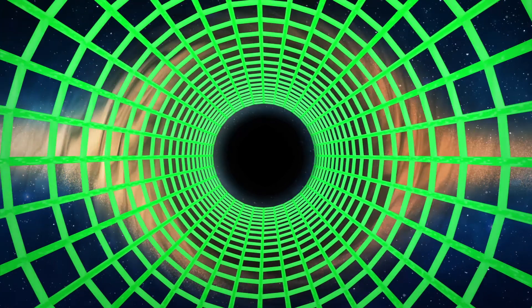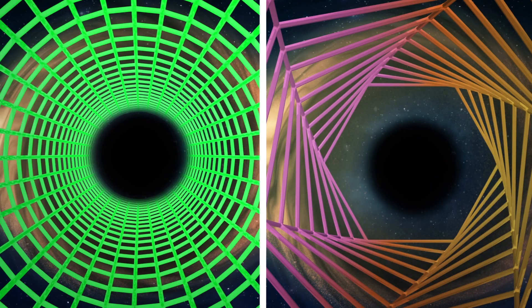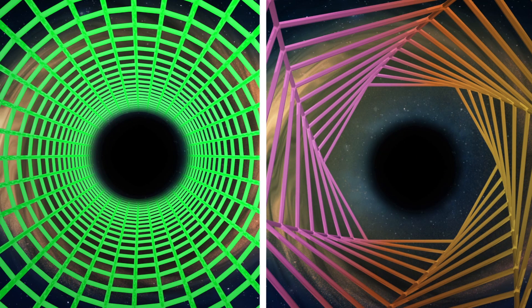However, the new observations using HAWC+ reveal that the magnetic field at the center of the Milky Way channels the gas so it flows into an orbit around the black hole, making the black hole calmer because it's not ingesting any gas that would ultimately create new stars.